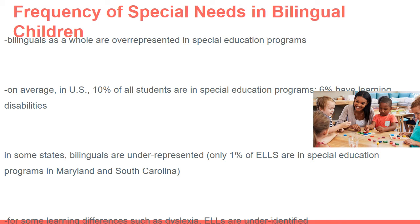Let's talk about the frequency of special needs in bilingual children. Overall, bilinguals are overrepresented in special education programs in the United States. On average, about 10% of students are in special education programs and 6% have learning disabilities. Since bilinguals are overrepresented, they are often above those numbers in many states. On the other end, in some states bilinguals are very underrepresented — for example, in Maryland and South Carolina, only 1% of ELL students are in special education, while the national average is 10%, a significant discrepancy.